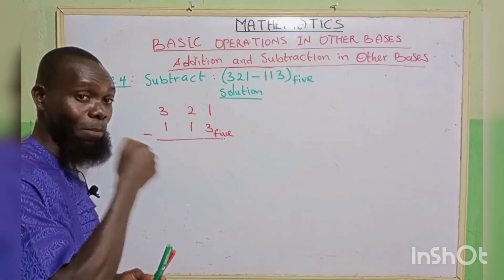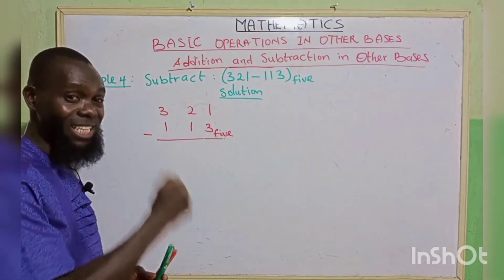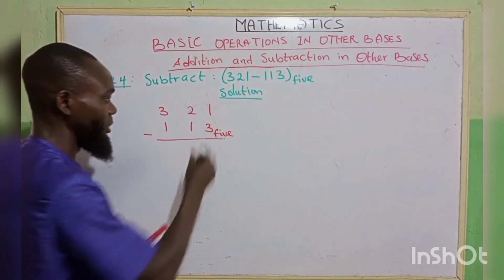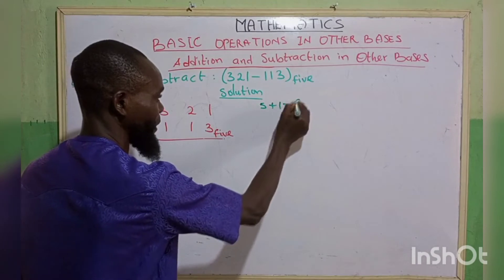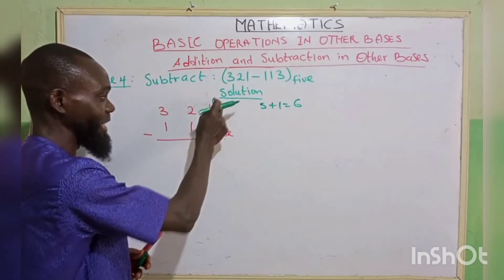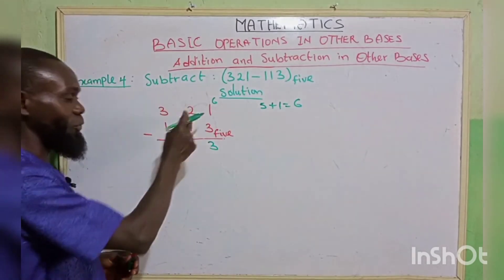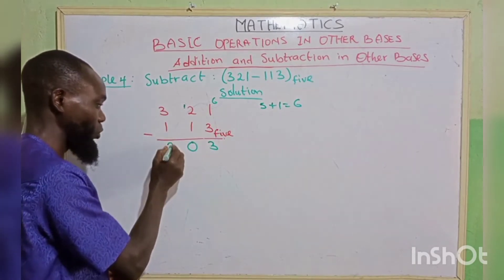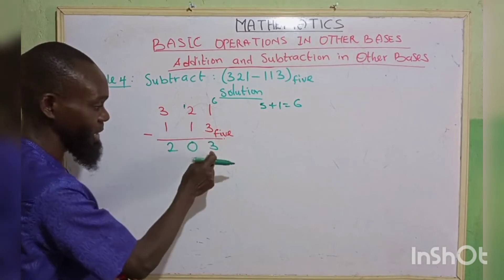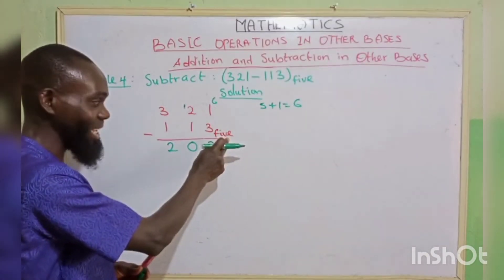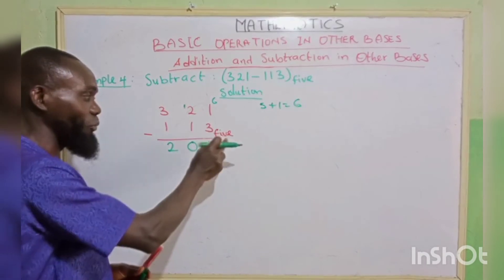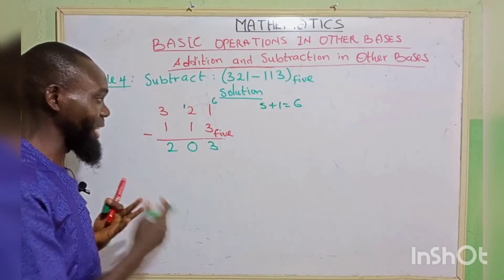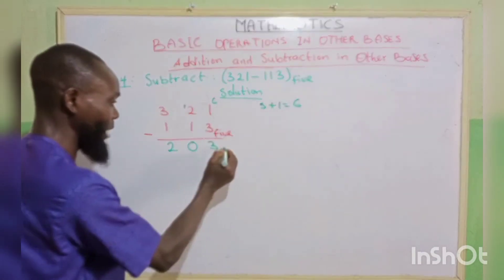The borrowed 1 becomes our base value, which is 5. So 5 plus the original 1 gives 6. 6 minus 3 gives 3. The next column has now been reduced by 1, so it becomes 1. 1 minus 1 gives 0. Then 3 minus 1 gives 2. Since 3 is below base 5, we write the result directly. The final answer is 2003 base 5.